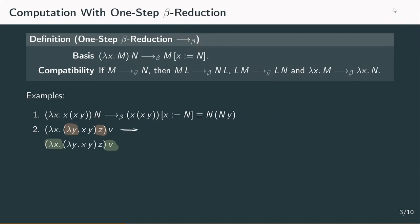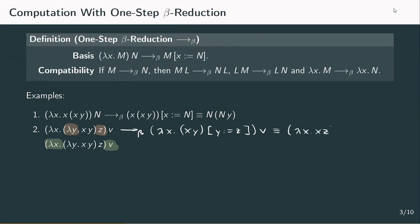Either we put in z for y by reducing the y redex, or we reduce the x redex with v as its input. If we reduce the y redex first, we get lambda x dot x applied to y, where we substitute y by z, and all of that still applied to v. Some additional parentheses might be useful to emphasize that the substitution happens inside the abstraction. By executing this substitution, we get lambda x dot xz applied to v. If we reduce the x redex first, we get lambda y dot xy applied to z with x substituted by v, and after substituting, we get lambda y dot vy applied to z.